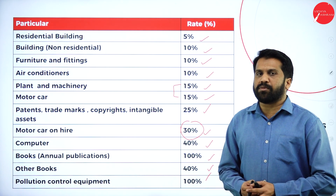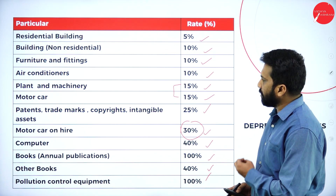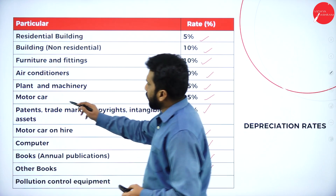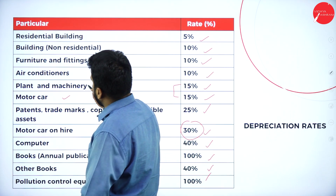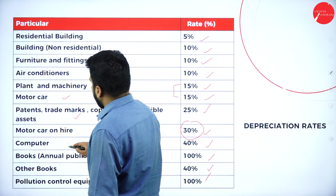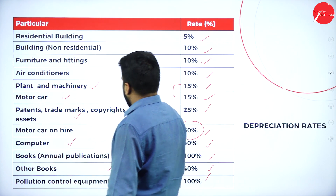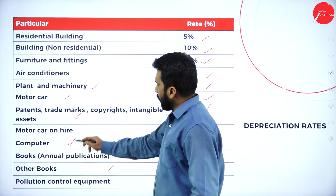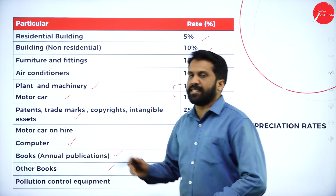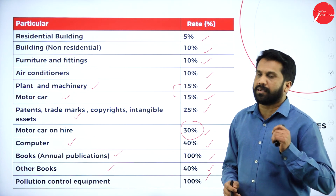It takes maximum 10 minutes to learn all the percentages. The most important ones are: plant and machinery, motor car, computer, books — these 6 items you are supposed to remember.